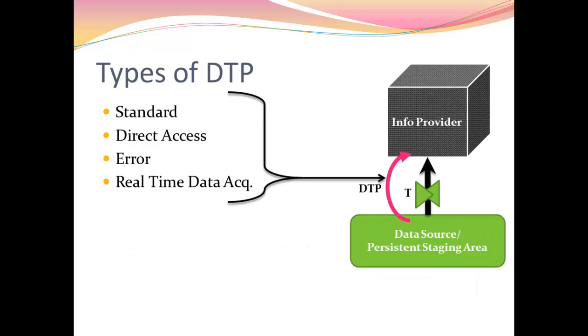Types of DTP: there are four types of DTP - standard, direct access, error, and real-time data acquisition. Standard type of DTP is used for loading the InfoCube DSOs, whereas direct access DTP is used to load virtual provider. Error DTP is used when while loading the data from PSA to info provider, the error prone records are loaded into our error stack. These erroneous records are manually updated and then we run an error DTP to load the data from error stack to our data target.